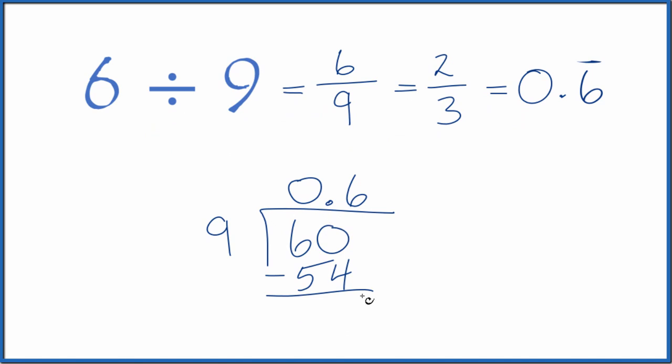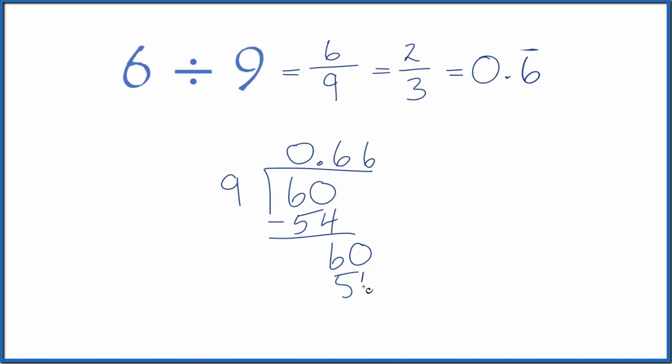We subtract, we'll get 6. 9 doesn't go into 6. We'll call it 60 and move over 1. Again, 6 times 9 is 54, and you can see where this is going. We end up getting 6 again, and the 6's keep repeating. So, we just write 0.6 with the bar here, but the 6's do keep repeating.